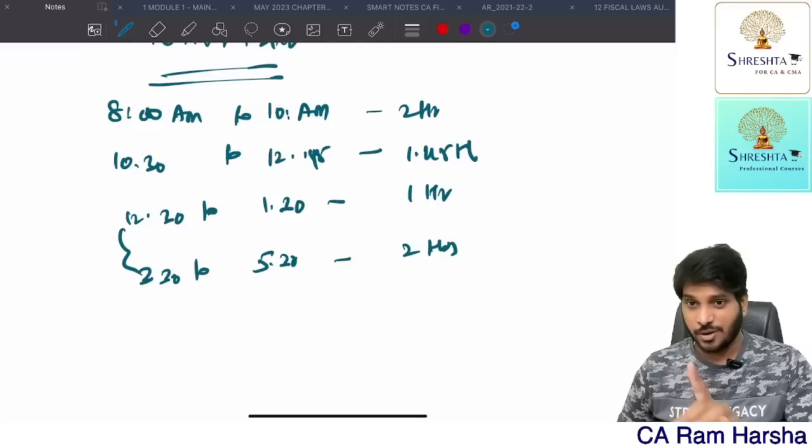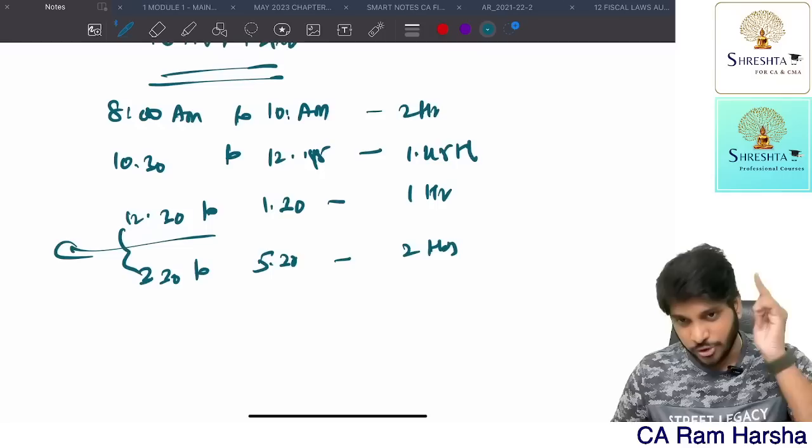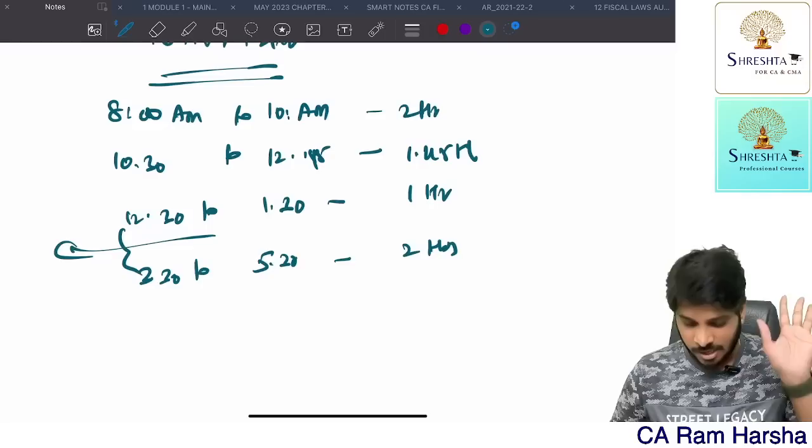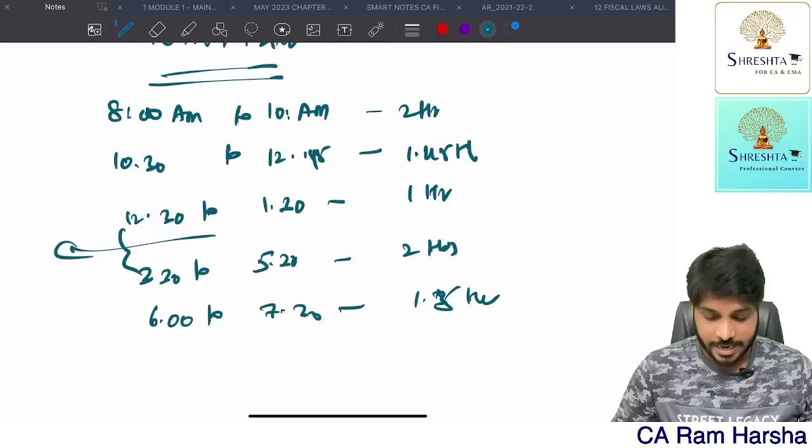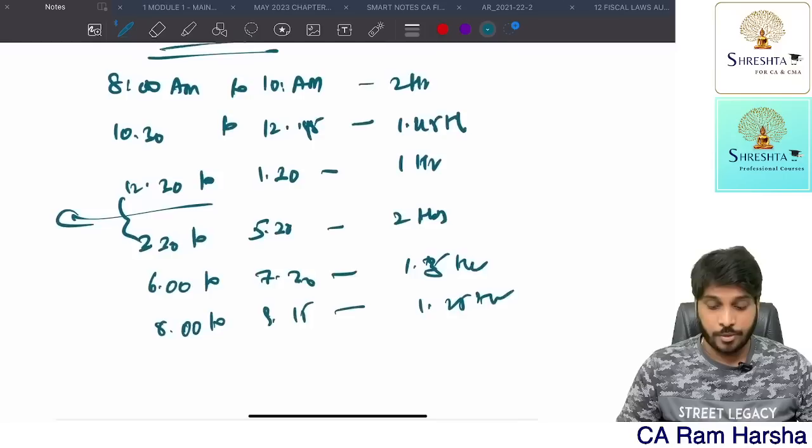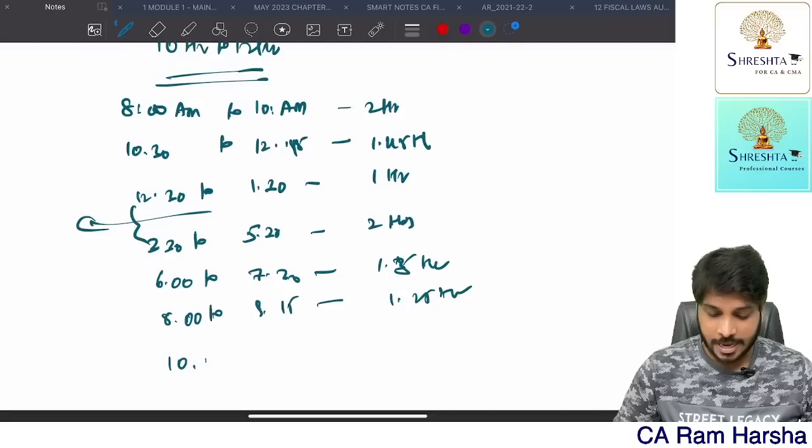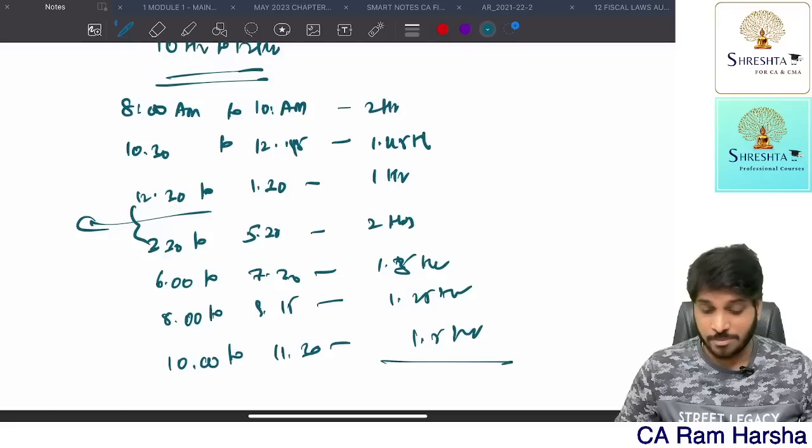Next, take half an hour break. 6 to 7:30, again one and a half hours. Again take half an hour break. 8 to 9:15, so 1.25 hours. Again take 45 minutes gap. 10 to 11:30, 1.5 hours. Let me see how much time it came: 2, 3, 4, 5, 6, 7, 8, 9, 10, 11—almost 11 hours. Beautiful, enough.